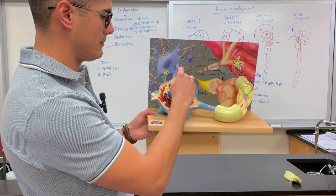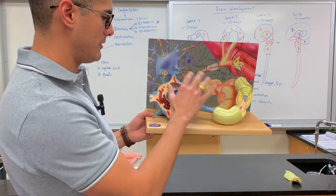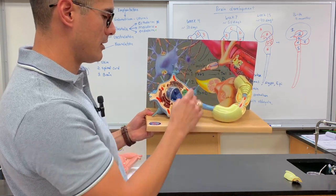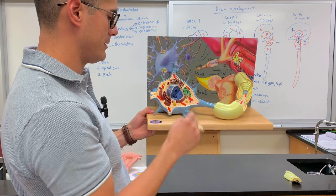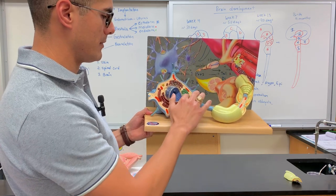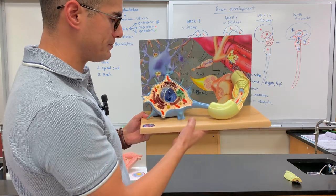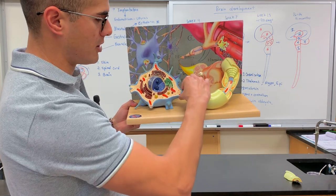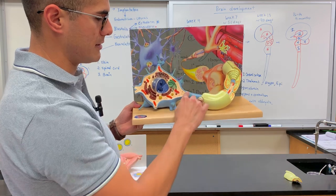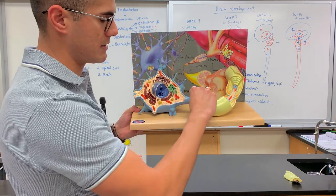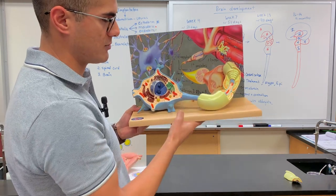This is the cell body, and we've already identified structures like the rough ER, the Golgi, the smooth ER, and the mitochondria. This particular part here is where the axon hillock is — it's this cone-shaped structure.